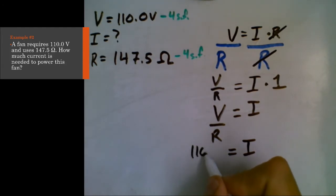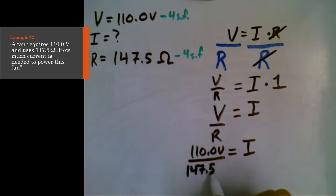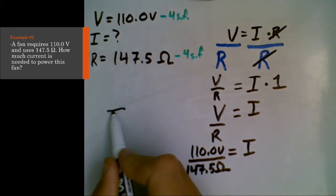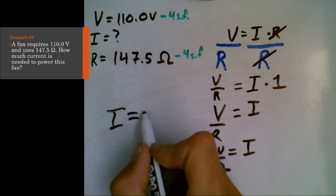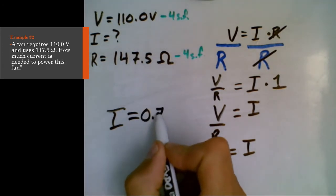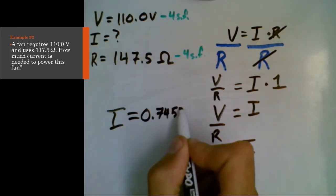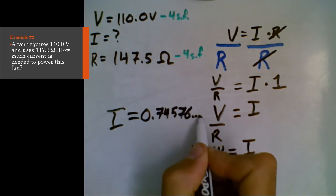And now that current is isolated, we can actually plug in our values for it. So 110.0 volts divided by 147.5 ohms. When you actually do this calculation, you can calculate I, and what you find is that I is 0.74576, and so on.